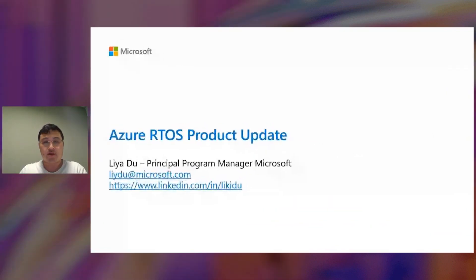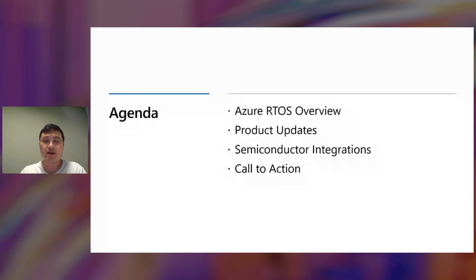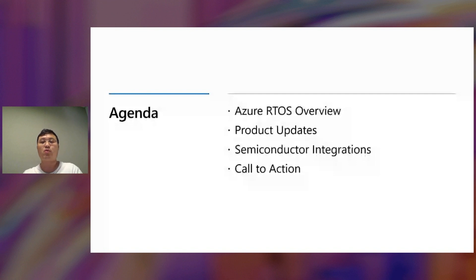This is our today's agenda. First, I'll give an Azure RTOS overview for people who are hearing about Azure RTOS as a product for the first time. Second, we'll go through some recent product updates we've been working on in the last year. Third, we'll talk about some semiconductor integrations, which are the most important work items we've been doing with our partners. And last, we have a call to action — we'll show you some useful resources you can take away and start using.